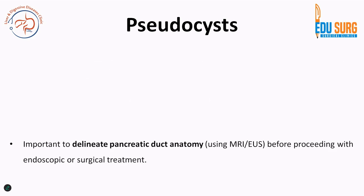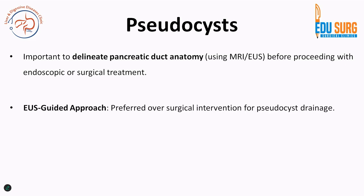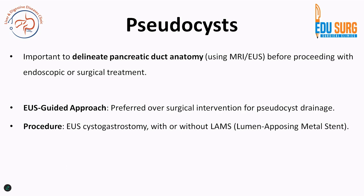For pseudocysts as a cause of pain, it is important to first delineate the pancreatic duct anatomy using MRCP or endoscopic ultrasound. Once the anatomy is delineated, you can proceed with endoscopic or surgical management. The EUS-guided approach is preferred over surgical intervention. The recommended procedure is EUS-guided cystogastrostomy with or without a lumen-apposing metal stent.